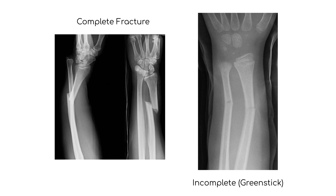A fracture can be complete, where the bone is separated into parts, or incomplete, where the bone is still connected. Fractures can also be classified based on the condition of the overlying skin. If the bone is visible, it is an open fracture, and if not, it is a closed fracture.